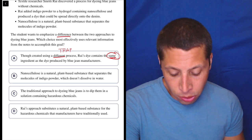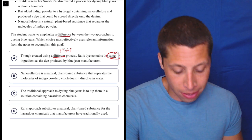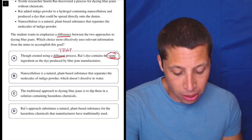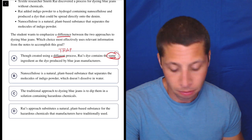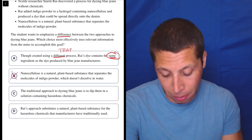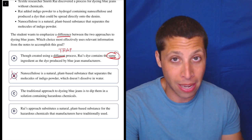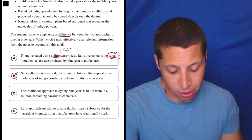Nanocellulose is a natural plant-based substance that separates the molecules of indigo powder, which doesn't dissolve in water. Great. That doesn't talk about the jeans at all, so I have no idea what they're talking about. That's not about how they dye them at all. So no good.